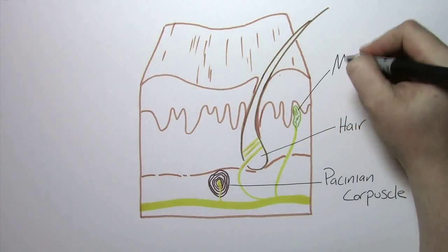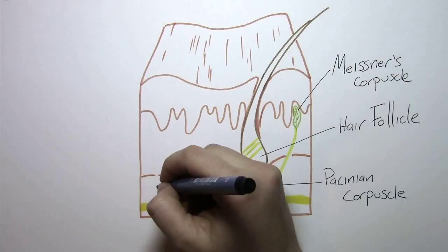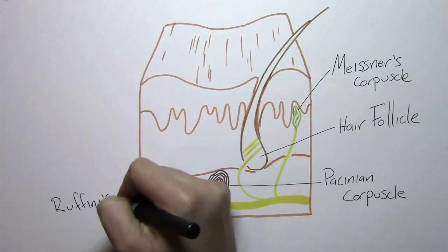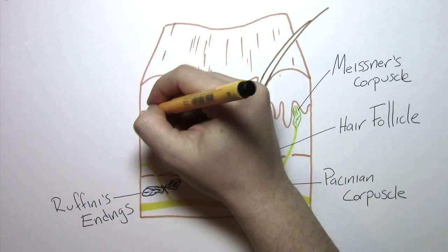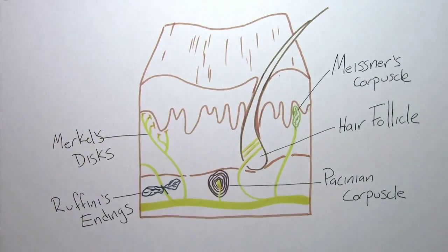Ruffini's endings, which activate in response to slow vibrations. And Merkel's disks, which give information about pressure and texture.